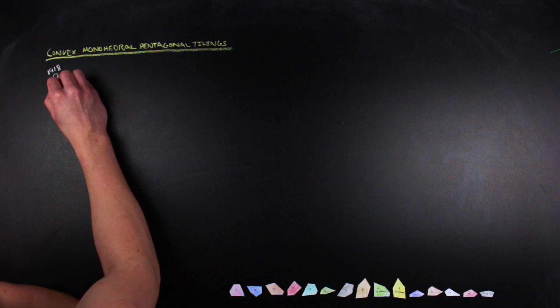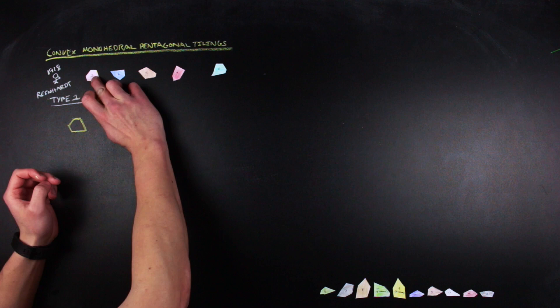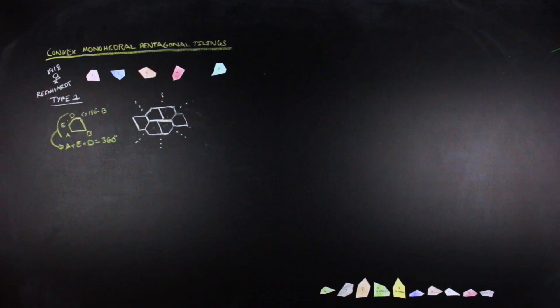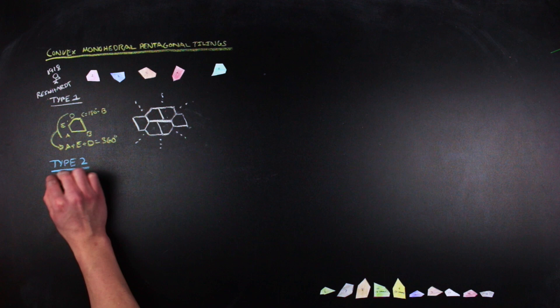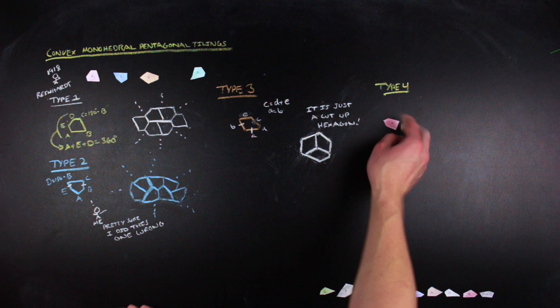The first set of solutions is attributed to Reinhardt, who in 1918 found the first five types of solutions to this problem. What's really cool about Reinhardt's solutions is that they all have lots of degrees of freedom. The only thing required for the type one solution were a few angle dependencies, and types two through five have progressively more restrictive conditions, but they start to incorporate different equalities on side length.